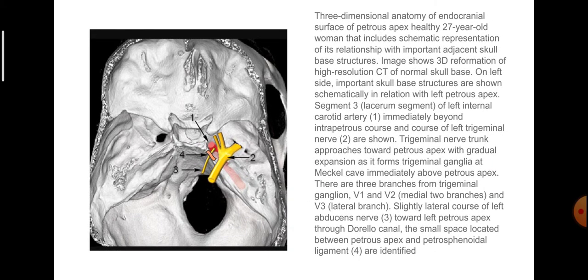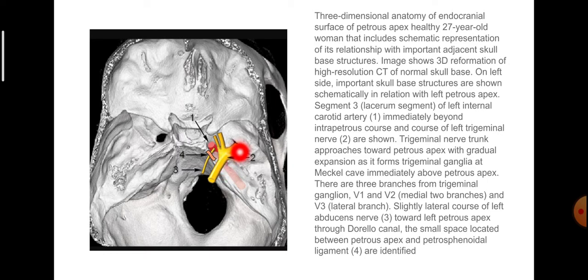Three-dimensional anatomy of the endocranial surface of the petrous apex in a 27-year-old woman, including a schematic representation of its relationship with important adjacent skull base structures. The image shows a 3D reformation of high-resolution CT of the normal skull base. On the left side, important skull base structures are shown schematically in relation to the left petrous apex: segment 3 of the foramen lacerum of the left internal carotid artery, and the course of the left trigeminal nerve — trigeminal ganglion, with ophthalmic, maxillary and mandibular divisions in Meckel's cave.